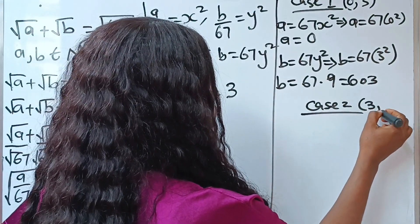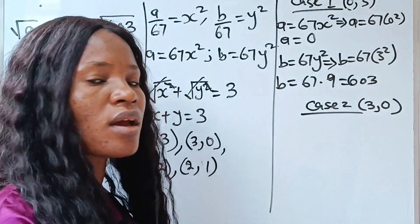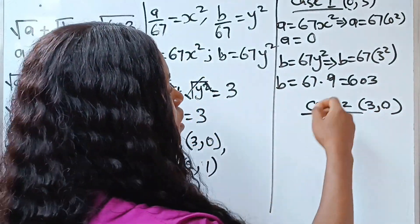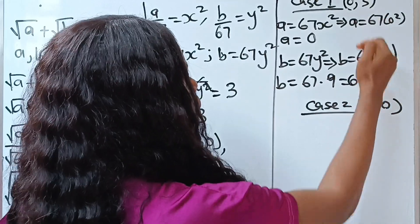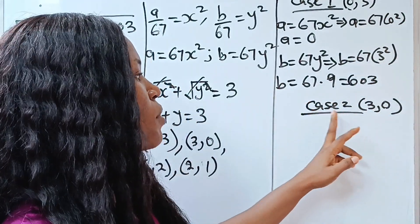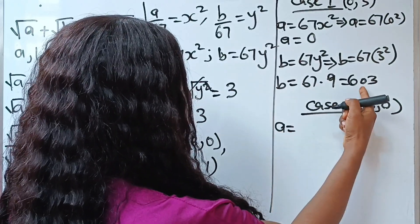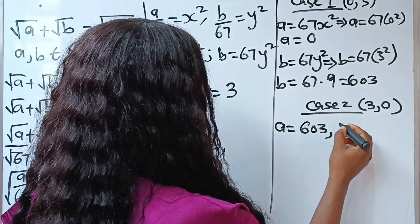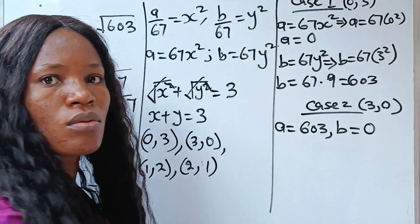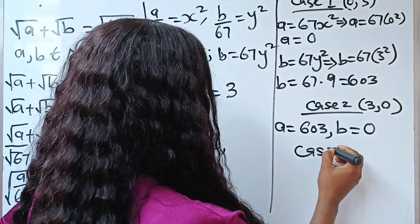For Case 2, x=3 and y=0. We just interchange the values of a and b from Case 1, so a=603 and b=0.